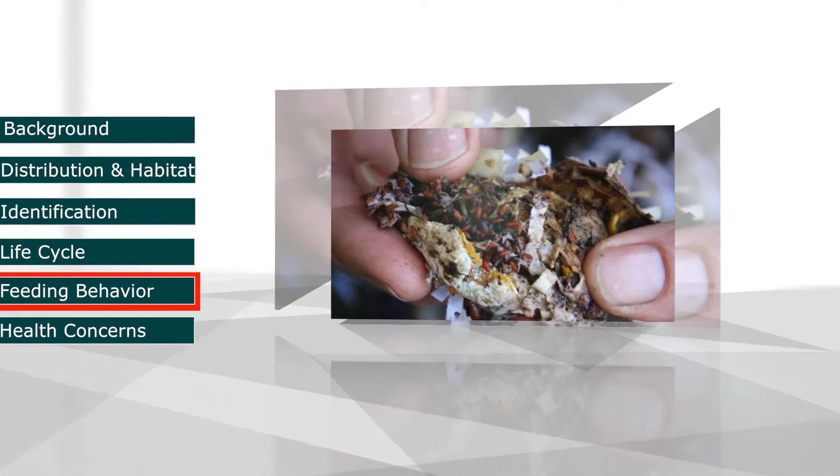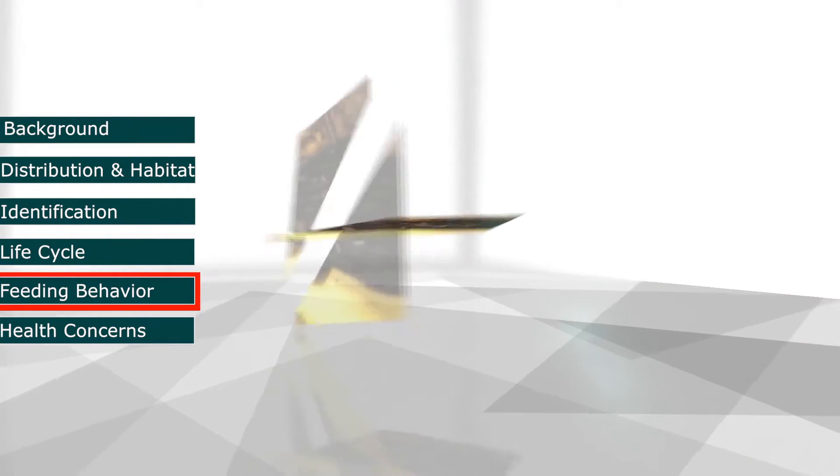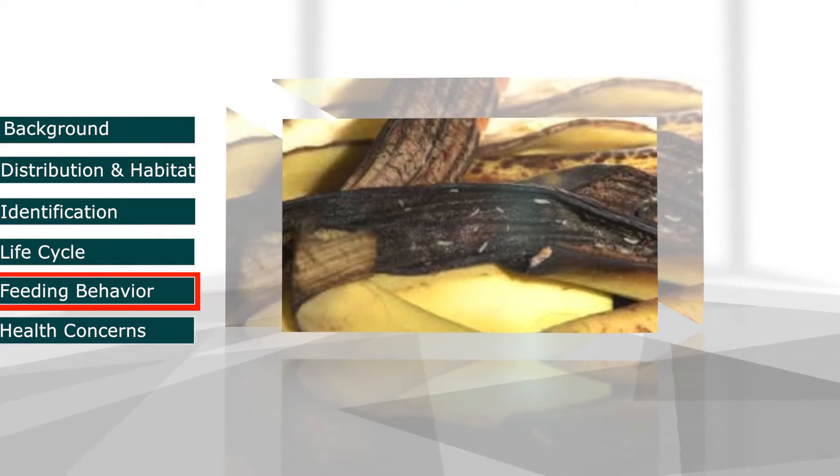Fruit flies feed and breed in yeast that is produced by decaying matter, vegetables, and moist decaying organic matter.